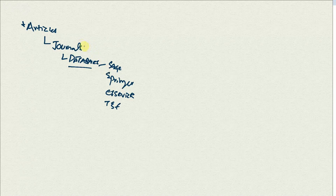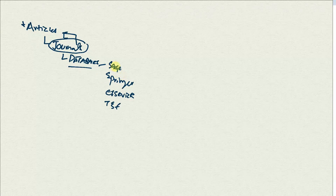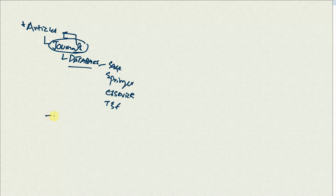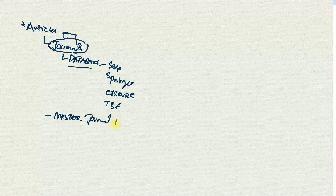Now, how do I find out if a particular journal that is publishing an article is of good quality? I will come across maybe hundreds or thousands of different journals. There is a way out for this — we have to go and look into the Master Journal List.